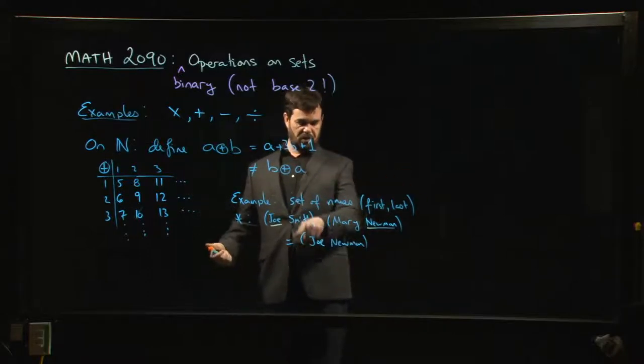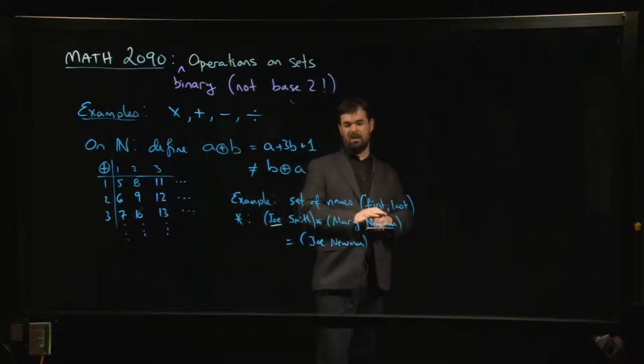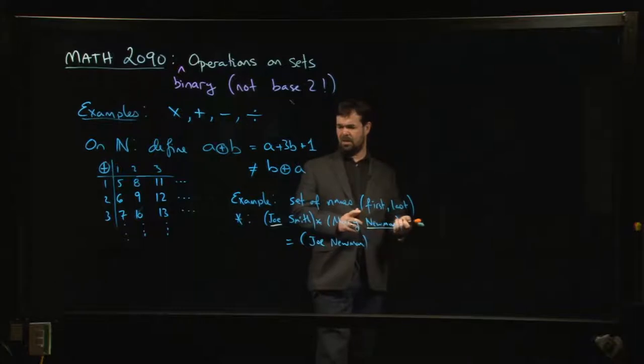Chances are that, well, obviously the set's not going to be closed under this operation. If I take any two people and ask you to combine your names in this way, you probably are not going to come up with the name of somebody else in the class. Actually, it'd be interesting to see if there are any two people that we can combine to get somebody else who is in the class. Probably not, I don't know.